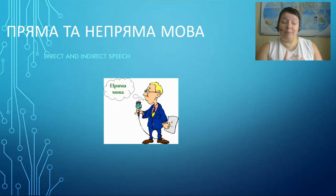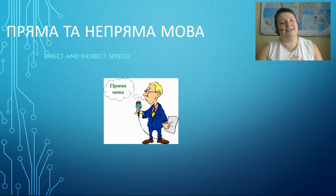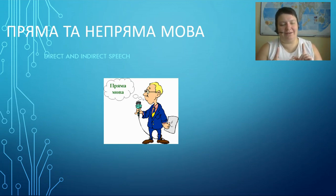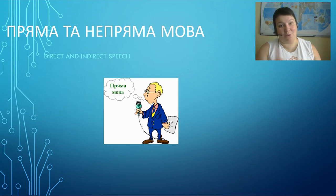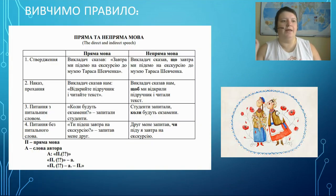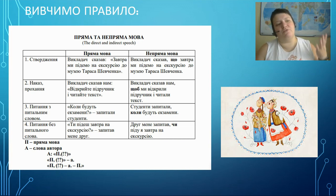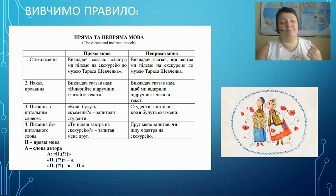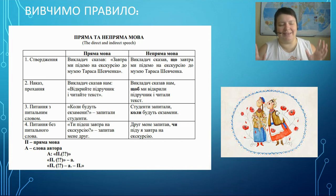Пряма та непряма мова — Direct and indirect speech, but in Ukrainian. It's not complicated. Let's learn the rule. Пряма та непряма мова — direct and indirect speech in Ukrainian. That's pretty easy.